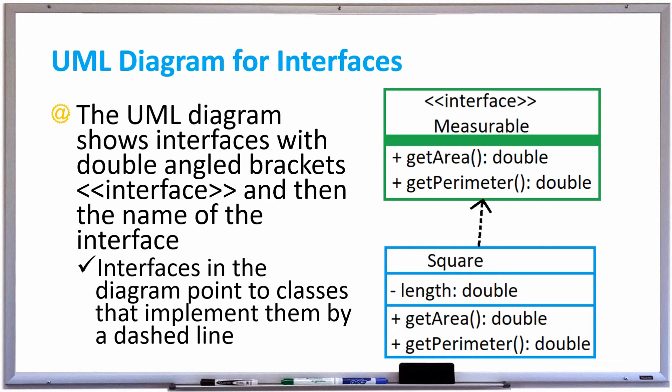Interfaces in the diagram point to classes that implement them by a dotted or dashed line. In this example we have an interface called measurable that has two method headers get area and get perimeter.